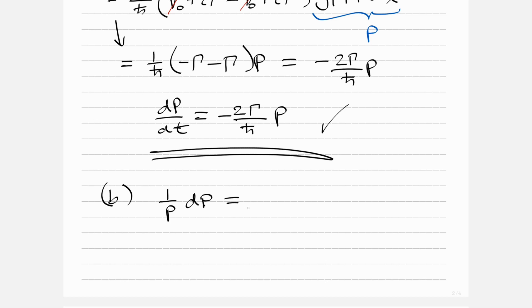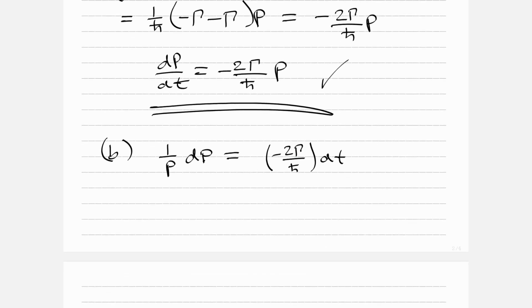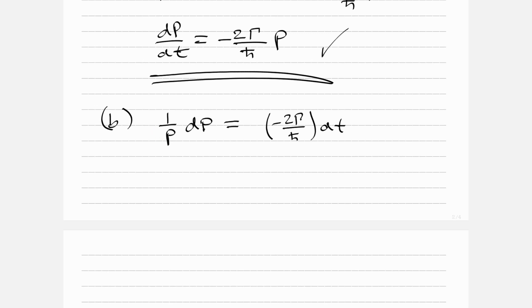That equals minus 2γ over ℏ bar dt - sorry, no integral yet, but that's obviously the point of what we're doing. We're going to integrate both sides. The integral of 1 over P is going to be the log of P, so we have ln of P equals minus 2γt over ℏ bar. That's a very easy one. We're just going to lump our constant all into the right hand side.